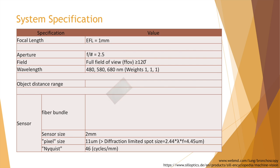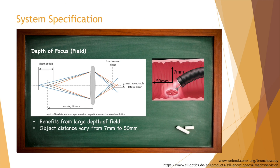To determine the object distance range, let's take a look at the depth of focus or depth of field. This refers to the longitudinal shift of the image sensor or the shift of the object that will produce an image degradation, but as long as the degradation is acceptable, the shift distance is within the depth of focus. Bronchoscopy benefits greatly from a large depth of field. The system needs to maintain high resolution even when the object is extremely close to the front surface of the lens. We push our target object distance from 7 mm, where biopsy can be successfully performed, to 15 mm, where normal detection distance usually is.